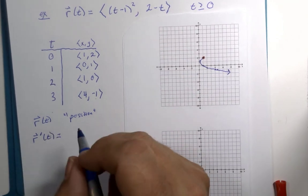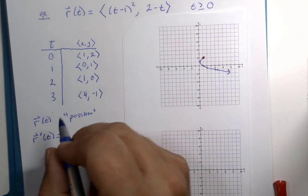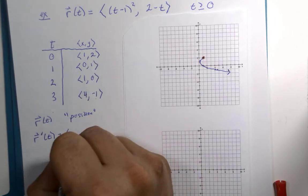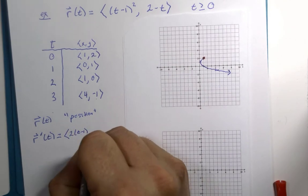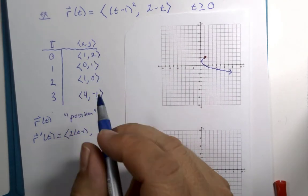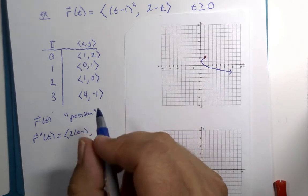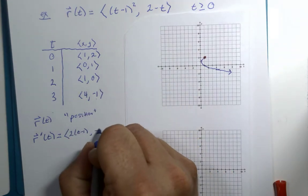So, the first term, the derivative would be 2 times t minus 1 to the first power, times 1 for chain rule. And the second term, its derivative is negative 1.